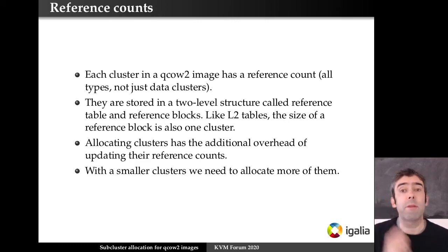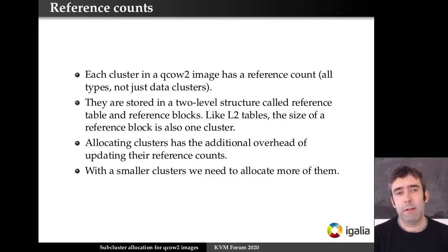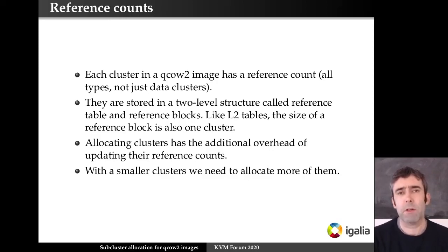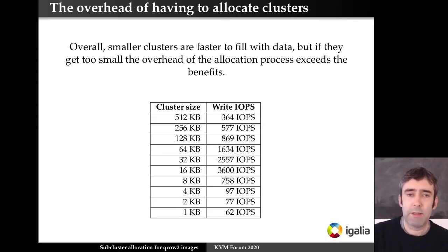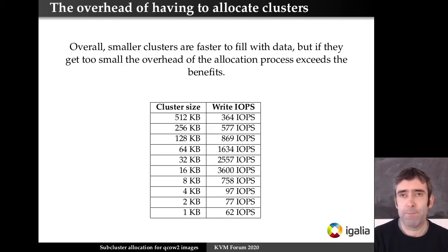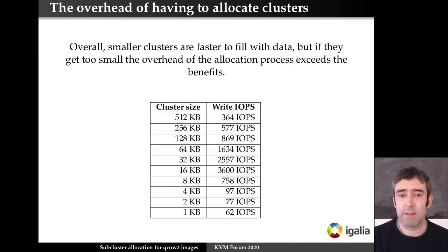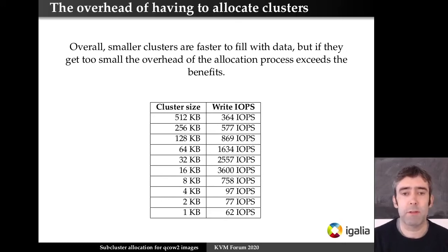Then there are reference counts. Every cluster in a QCow2 image has a reference count — all types of clusters, not just data clusters. These are used for snapshots because you need to know who is using each cluster. They are stored in a two-level structure called reference table and reference block, similar to L1 and L2 tables. Allocating new clusters has additional overhead because you need to update the reference counts. With smaller clusters we need to allocate more of them, more L2 tables, and more reference blocks. Although reducing cluster size initially improves performance by reducing copy-on-write, once we go below a certain limit — in this example less than 16k — performance goes down very quickly, and at 4k clusters performance is horrible even though there's no copy-on-write.